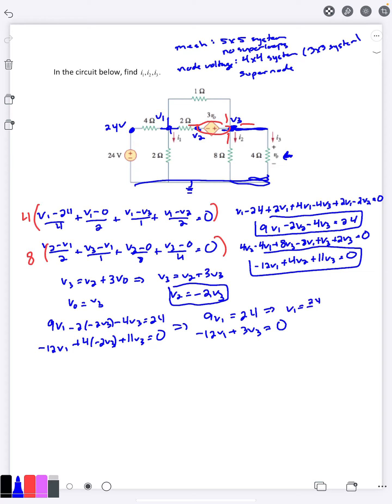So v1 is going to be 24 over 9 which is the same as 8 thirds volts. Plugging that into the second one here, negative 12 times 8 thirds plus 3v3 is 0. Negative 12 times 8 thirds is negative 32. Add that over, we're going to get 32 over 3 here for v3, and then we can find out v2 is negative 2 times v3, is negative 64 thirds volts.